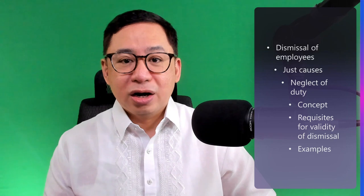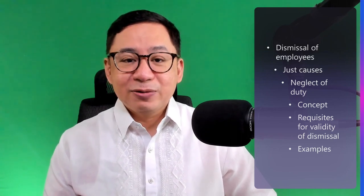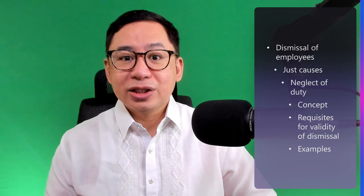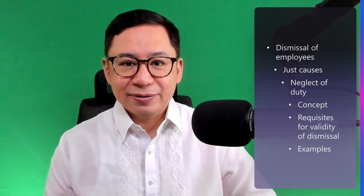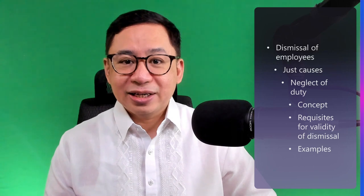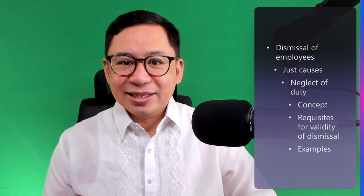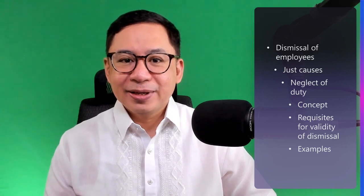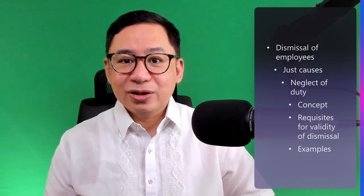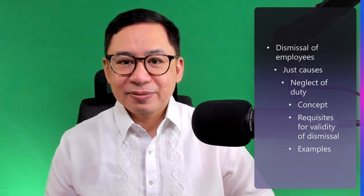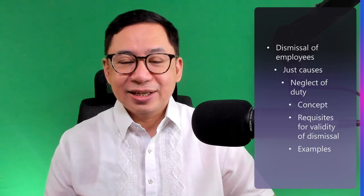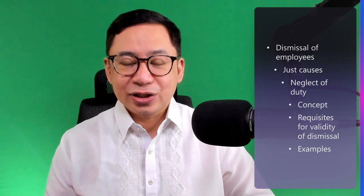Example: a bank teller forgetting to lock the vault. Negligence, on the other hand, is a subjective state of mind. It indicates a particular reason why the man has failed to do his duty, namely because he has not kept the performance of the duty in his mind as he ought to have done. Example: the bank teller failing to lock the vault as she was in a hurry to leave the bank because she had a date. A man can neglect his duty either intentionally or negligently. Damage is not an essential element. An employee can be dismissed for gross and habitual neglect of duty even if the employer did not sustain any damage. It is enough that the neglect tends to damage or prejudice the employer.